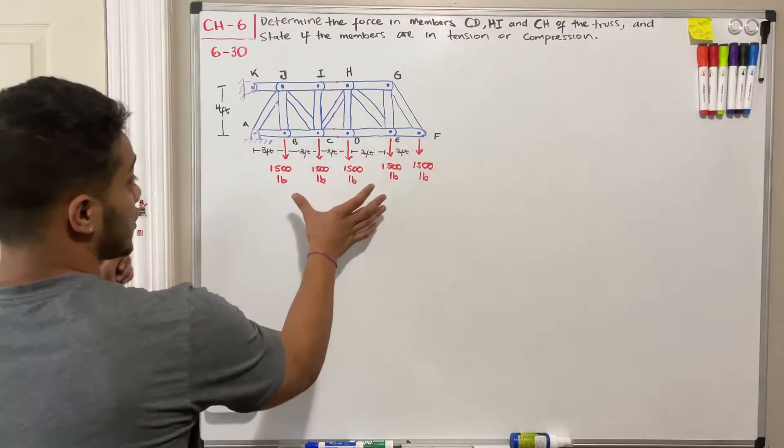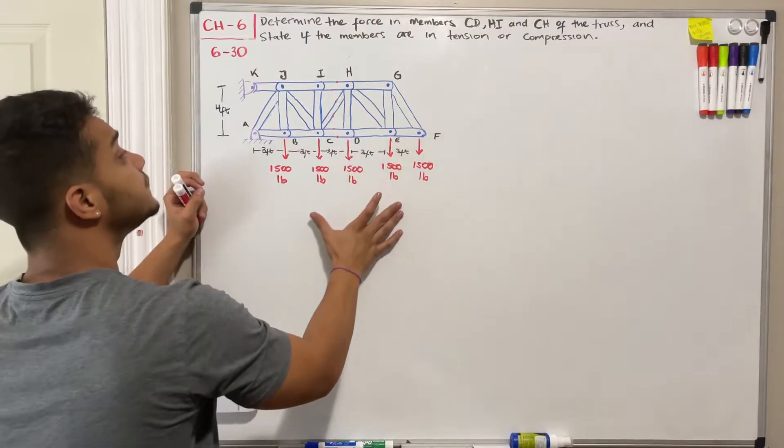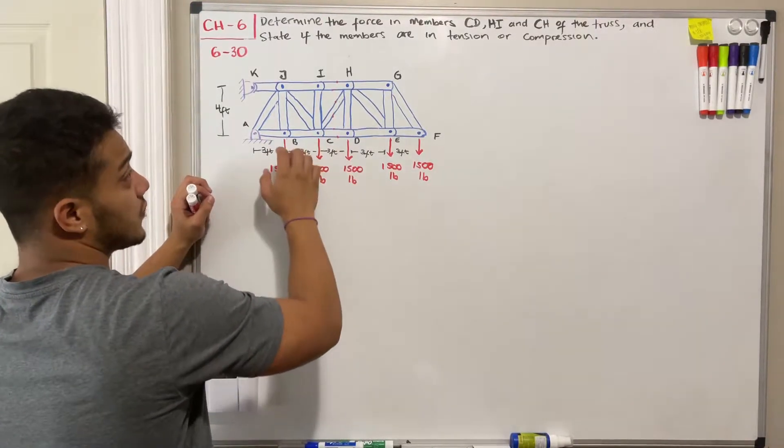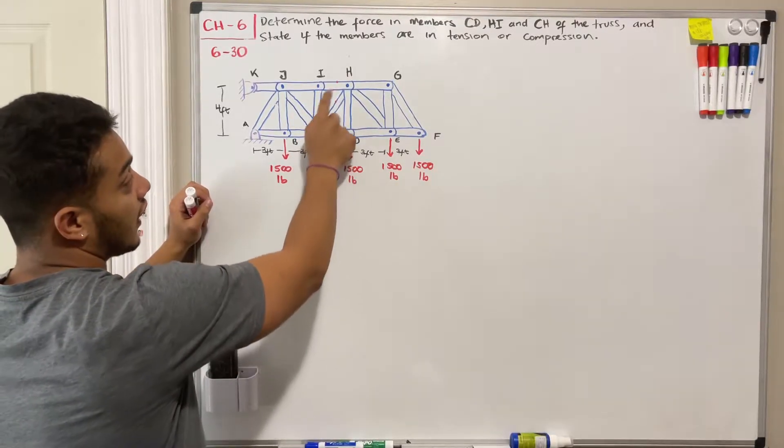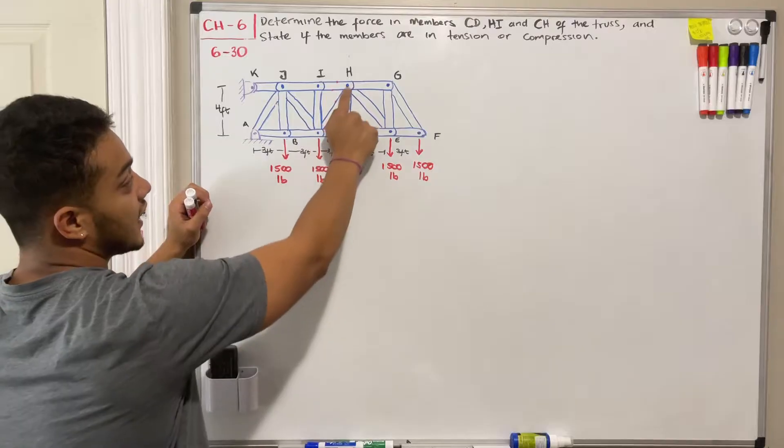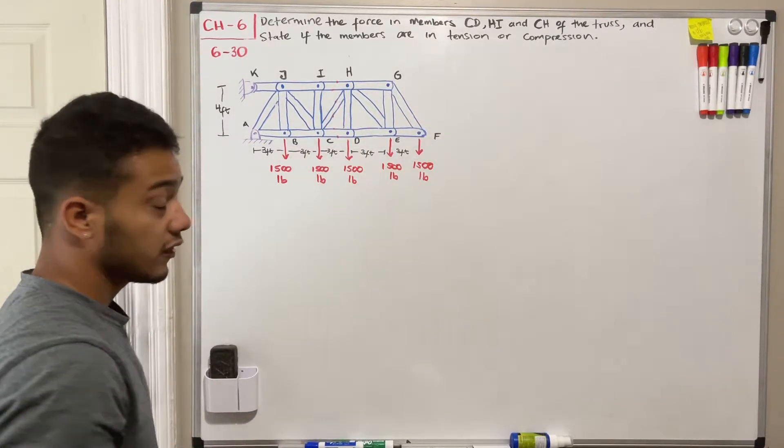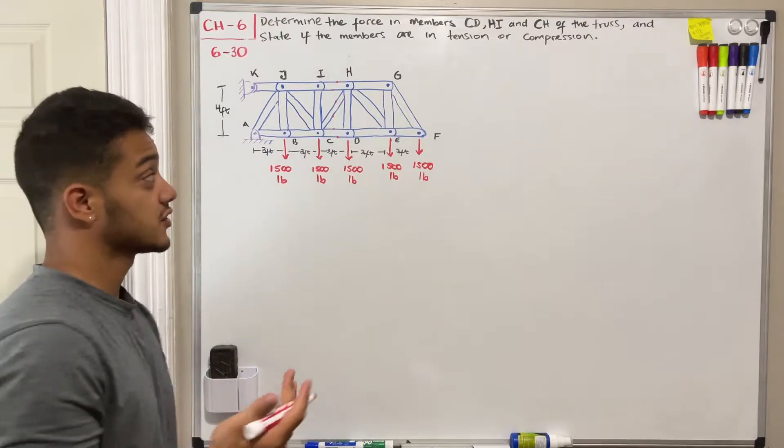So we got our truss members over here and the ones that we want to calculate are CD, HI, and CH. Therefore for this problem we're going to apply the method of sections.